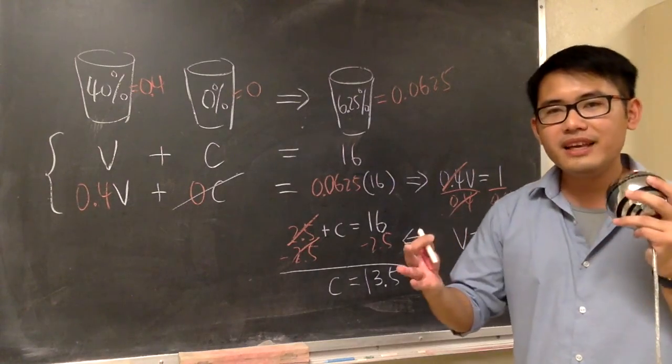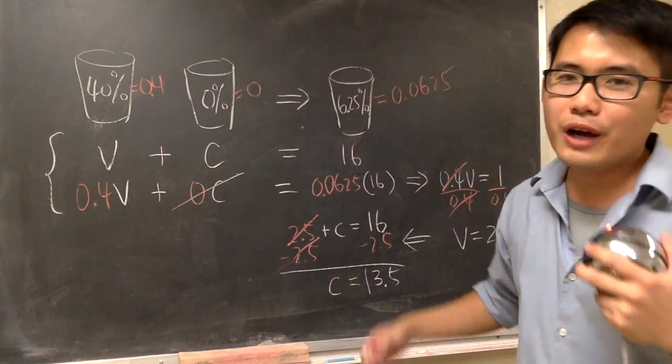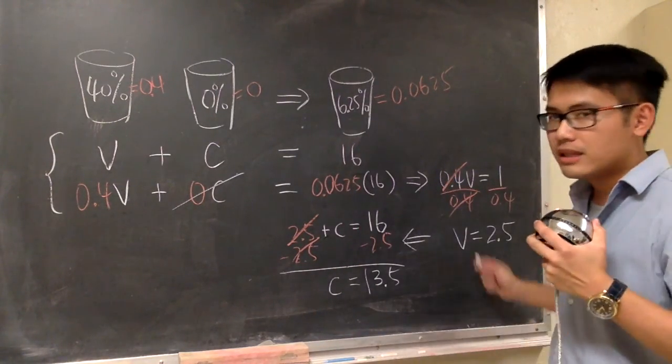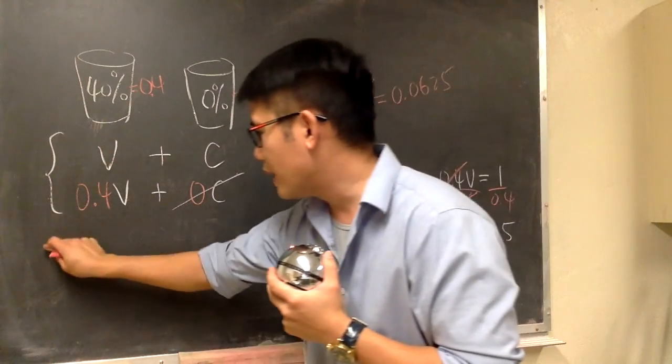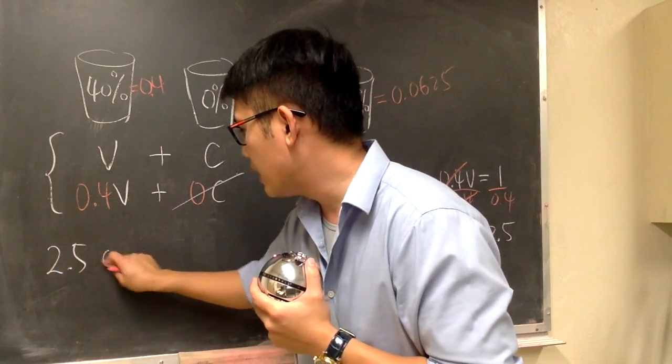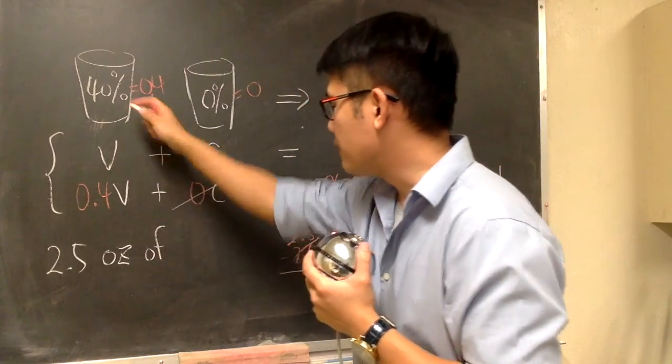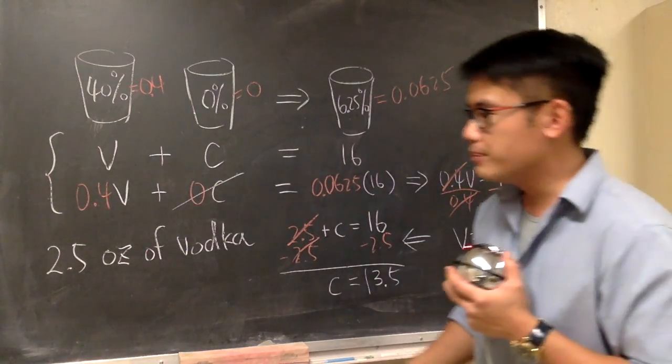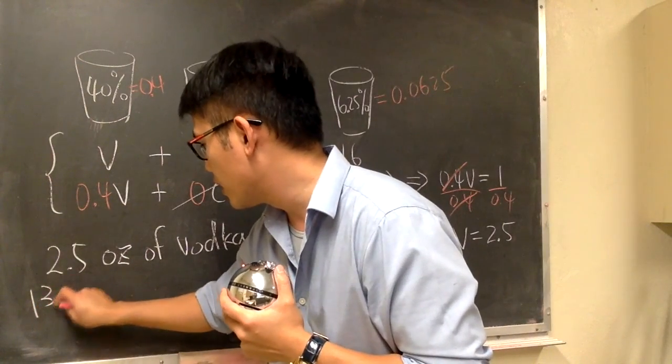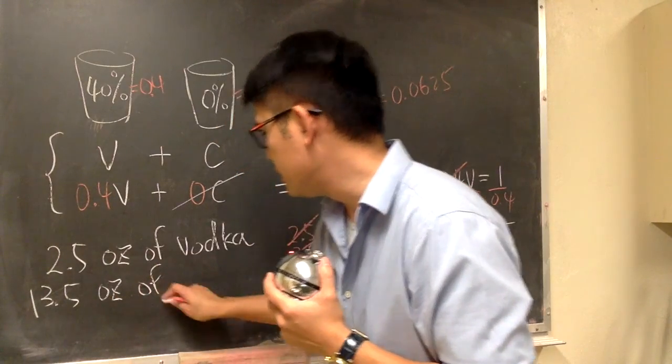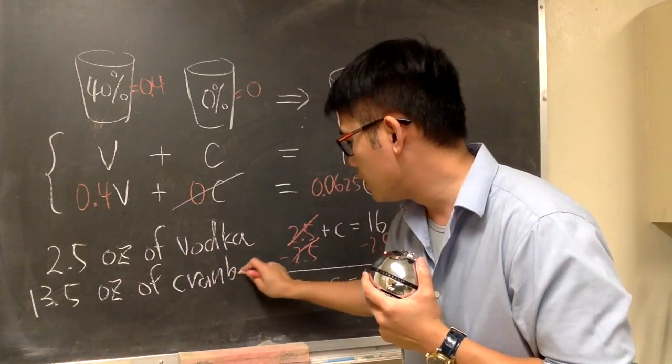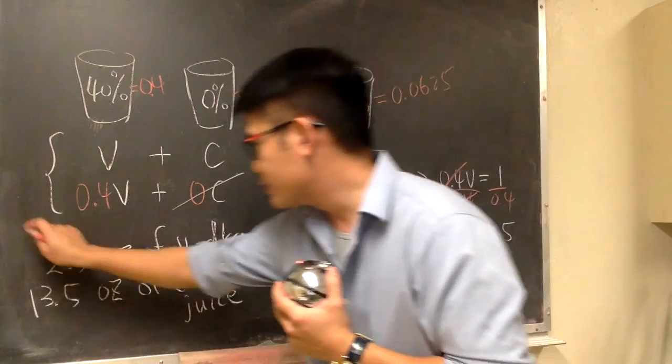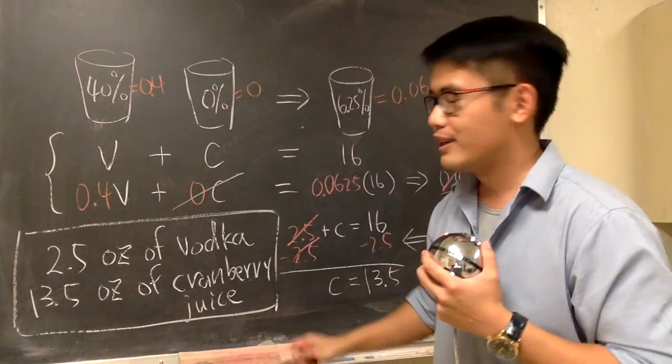And at the end, keep in mind, you are the bartender. You have to come with the recipe. So you have to make sure you write down the direction clearly. So, based on this, I will write it down right here for you guys. We need to have 2.5 ounce of the vodka we have, right here. And then, we must have 13.5 ounce of the cranberry juice. And this right here is the perfect recipe.